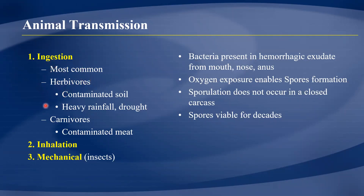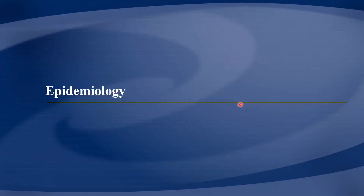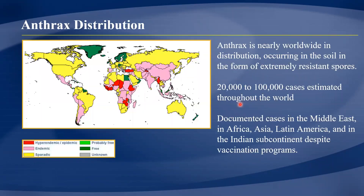For animals, herbivores become infected by ingesting spores in contaminated soil while grazing. Carnivores such as dogs can be infected by eating carcasses of animals that died of anthrax. Animals can also inhale spores or receive them through an insect bite, which is mechanical transmission. In most cases the bacteria are discharged through the mouth, nose, or anus, form spores, and remain viable in the environment for many years.